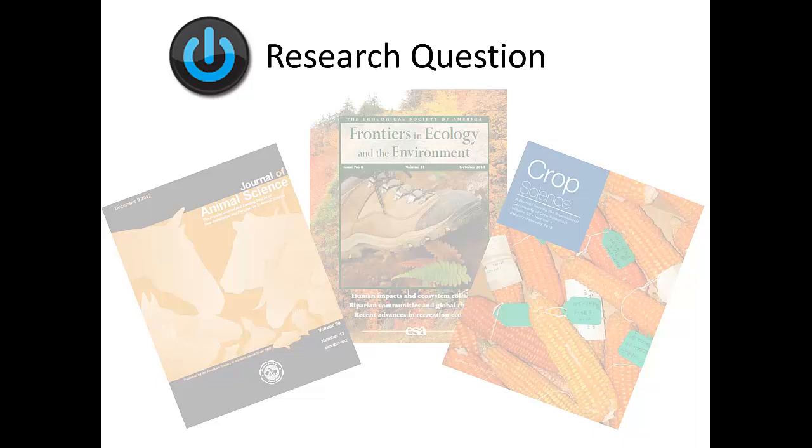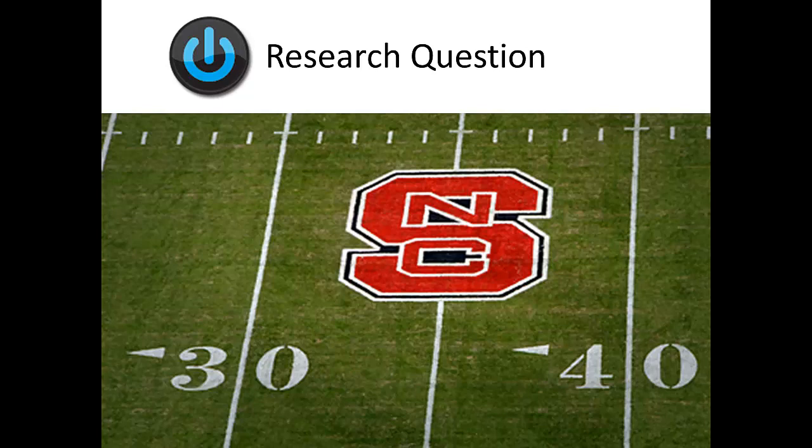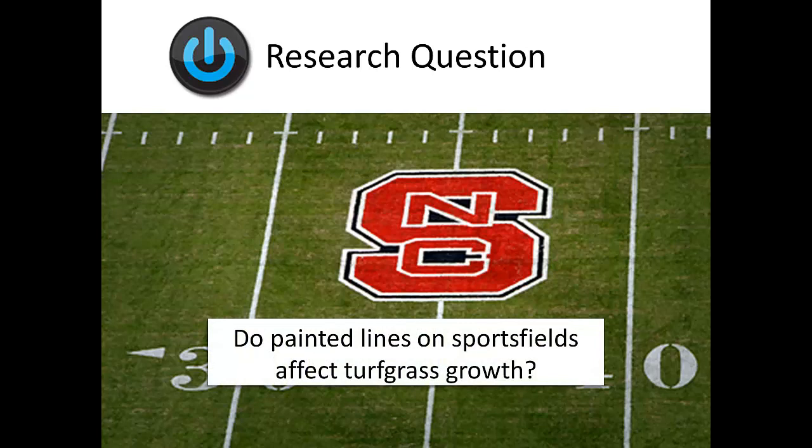Before searching for journal articles, be sure to have a clear research question in mind. This will help you identify the keywords to use in a search of the literature on the subject and find the articles of relevance to your question. In this example, I wanted to explore the effect that painting lines and logos had on football fields which had natural grass turf as a playing surface. My research question was, do painted lines on sports fields affect turf grass growth?